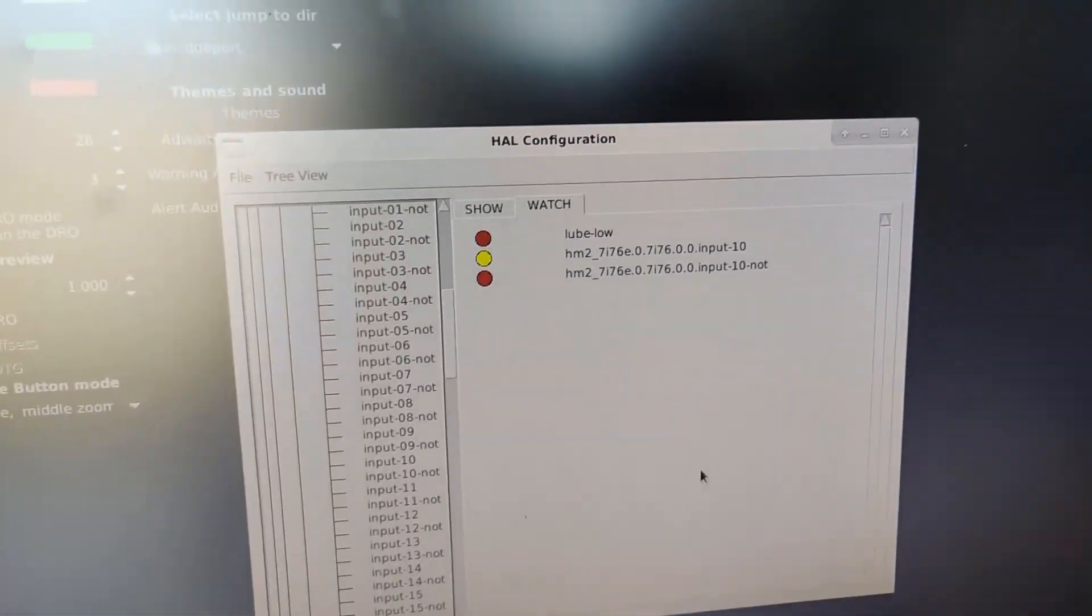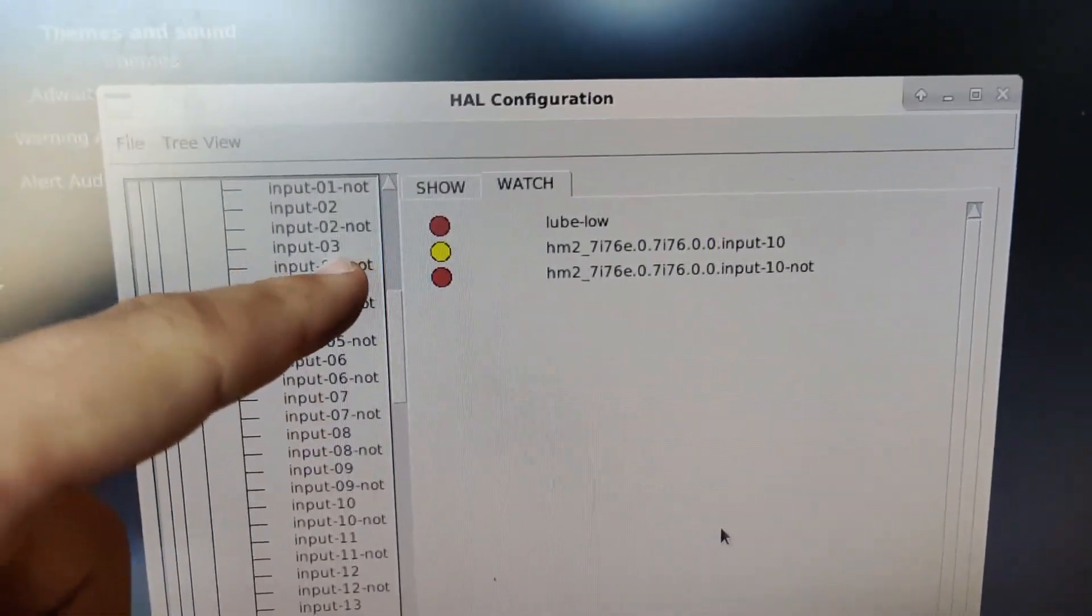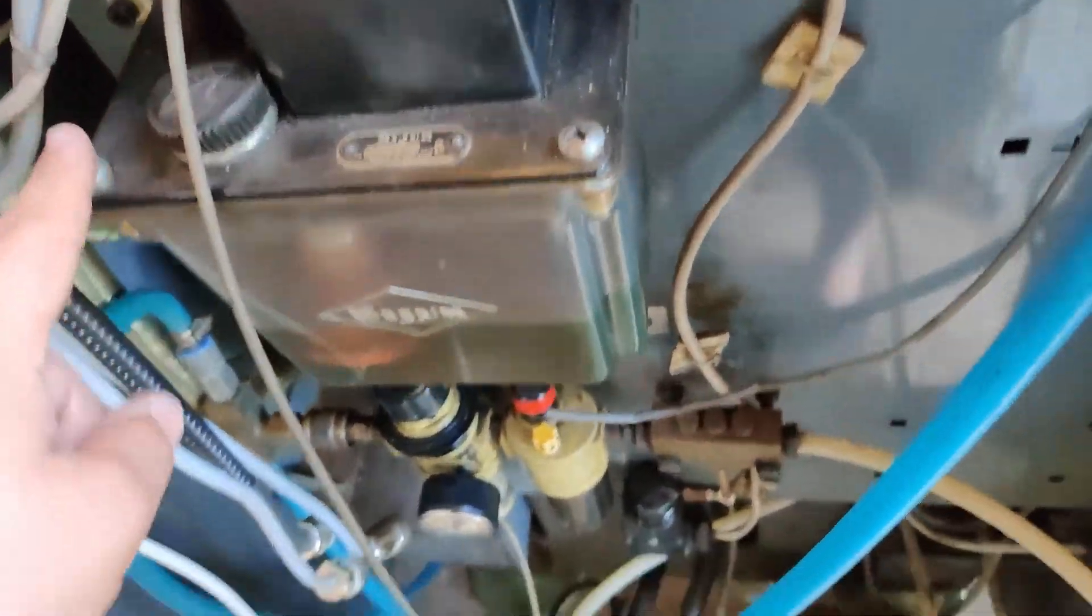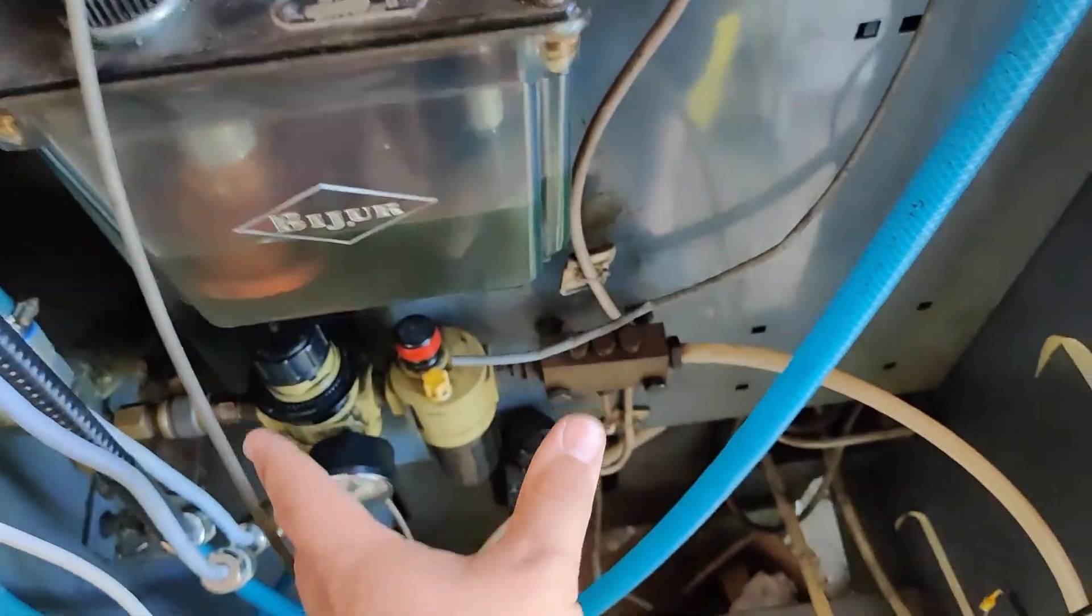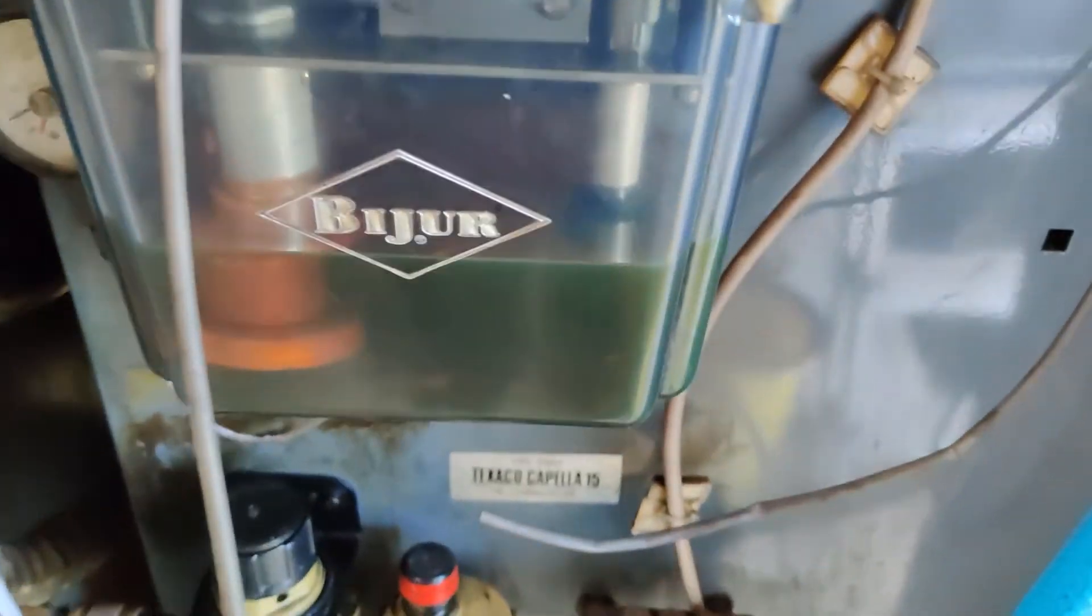So just turn on the machine and open up HAL show. Just open up the pin for lube low, these three. So next thing I'm going to do is just take this, lower it, just pull it off and see if the state changes. So I'll get back in a second.